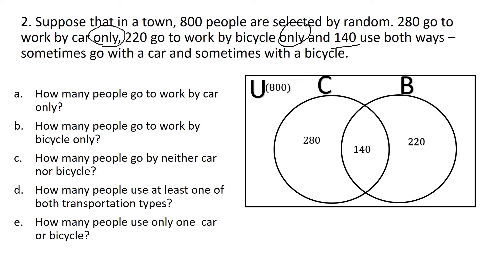We can immediately answer the first two questions. How many people go to work by car only? It is clearly 280 people. How many people go to work by bicycle only? That is 220 people.